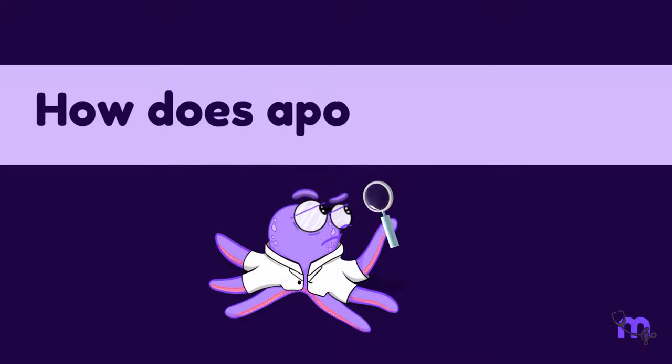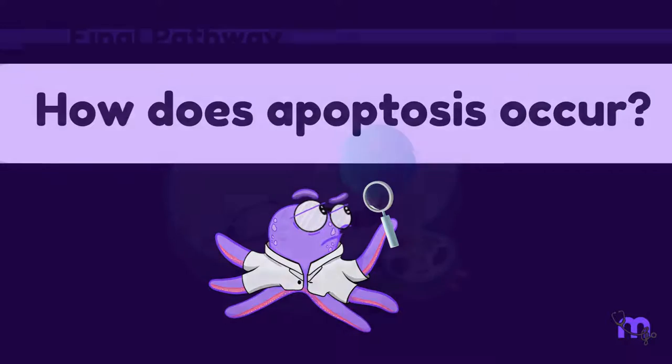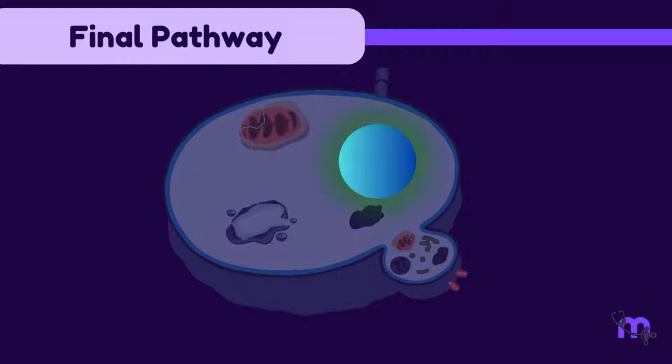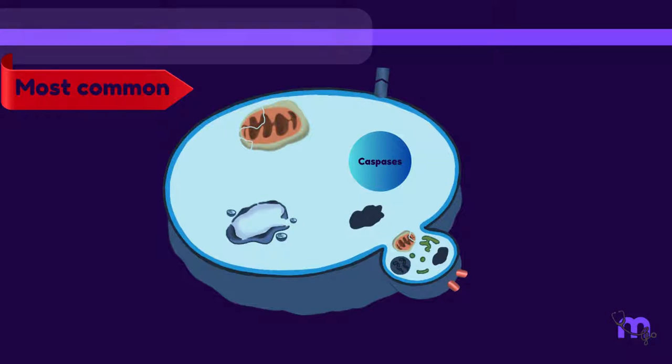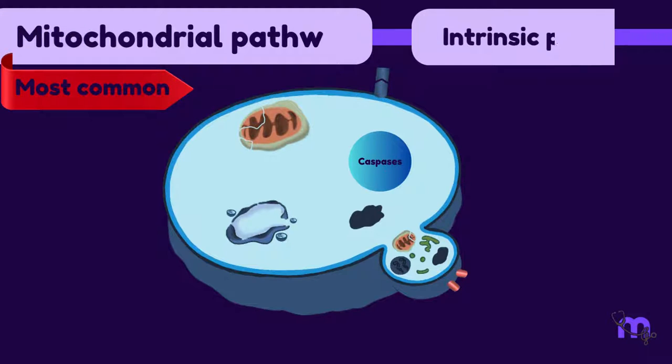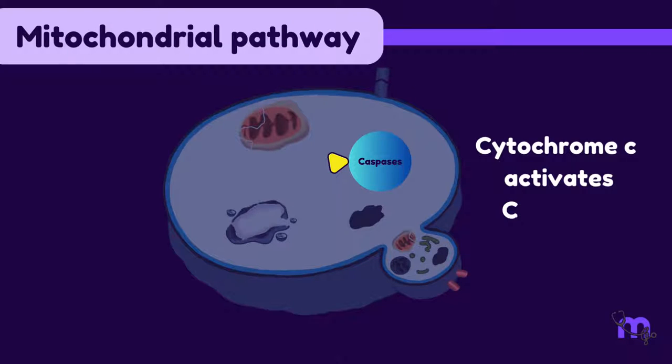How does apoptosis occur? Any of the causes mentioned earlier can be a trigger. The final pathway includes the activation of cytoplasmic proteins called caspases which cause structural breakdown of the cell. The most common pathway is the mitochondrial or intrinsic pathway where cell injury triggers release of cytochrome C from the mitochondria which in turn activates caspases and apoptosis.